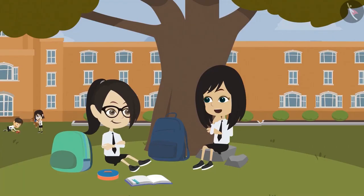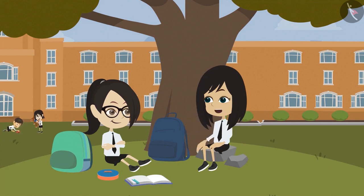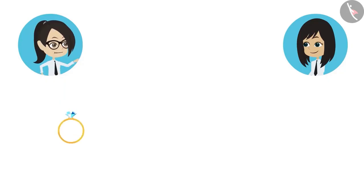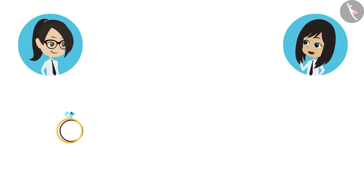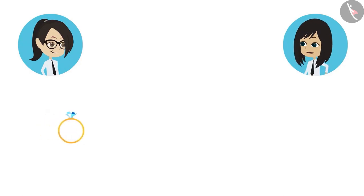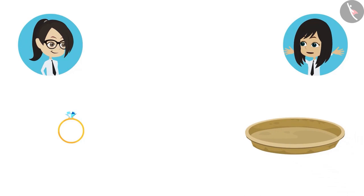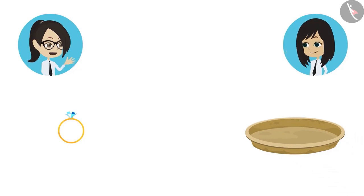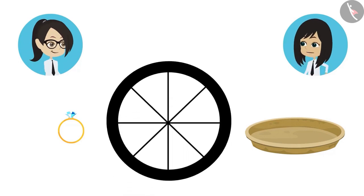The student asks what other objects can be used to make a round figure. A ring can also be used, but it makes a very small round figure. To make a bigger round figure, we can use a plate. For an even bigger round shape, we can use the tire of a cycle.